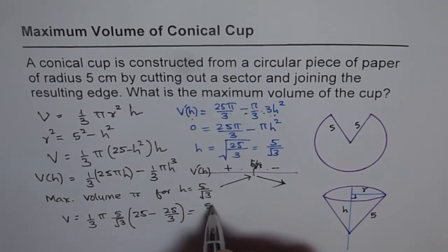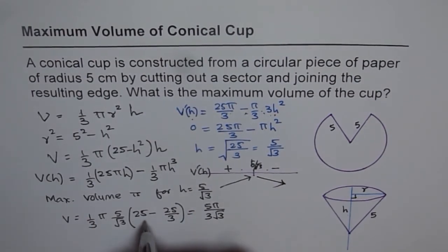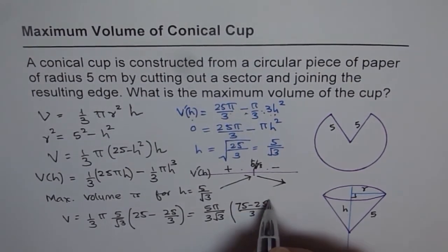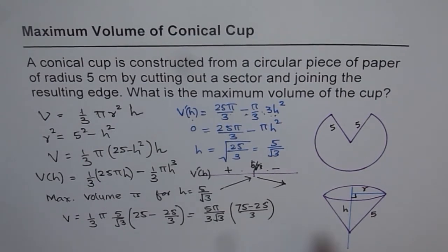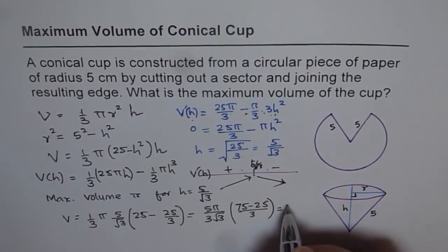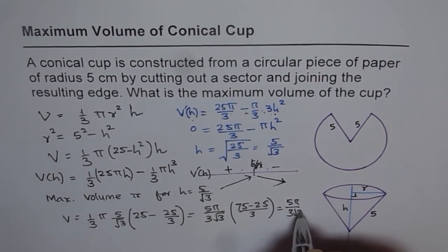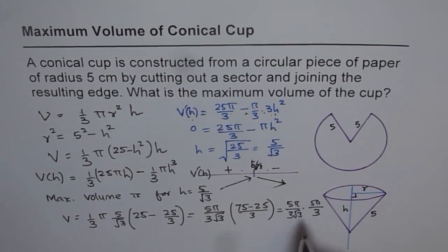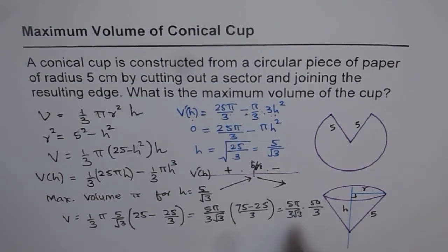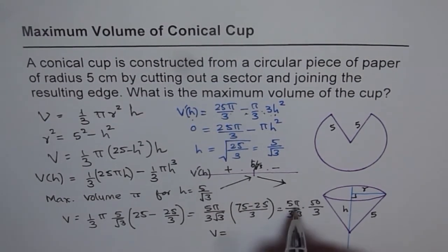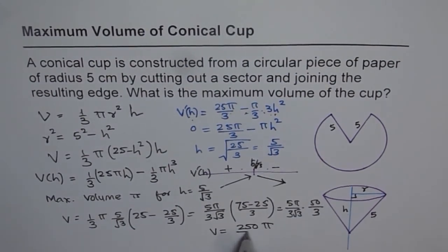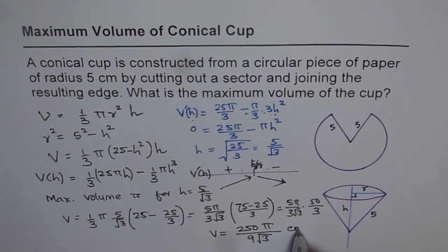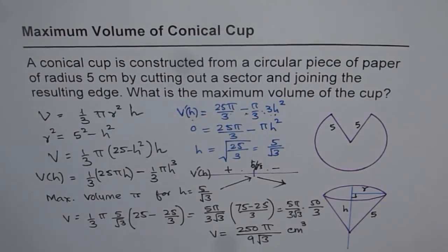We can simplify and find the answer is pi over 3 square root 3, and inside we get 3 times 25 is 75 minus 25 over 3, and that is 50. So this is 5 pi over 3. So that is the maximum volume which you will get in this case. So let me write down here, maximum volume is 5 times 50 is 250 pi over 3 times 3 is 9, 9 square root 3. So that is the maximum volume in centimeter cube in this particular case. So that is our answer.